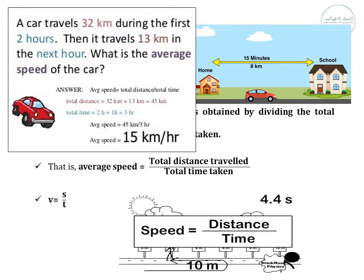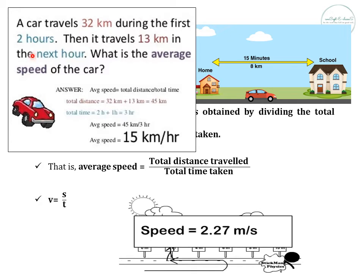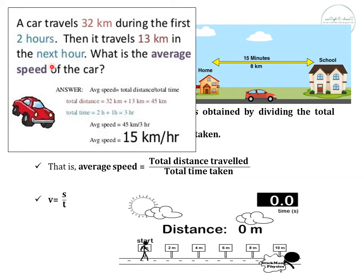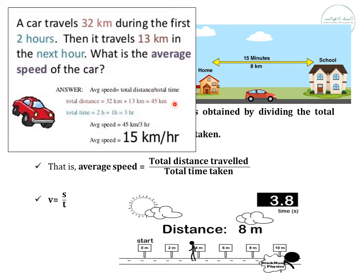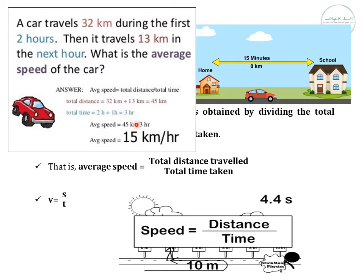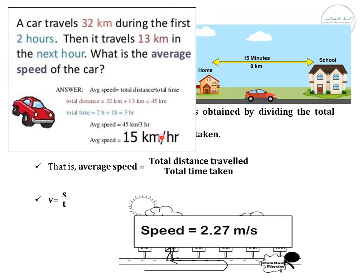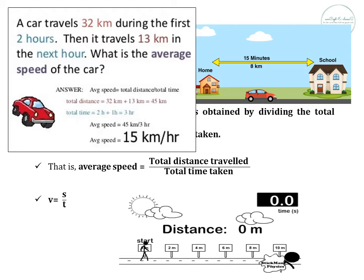Let us understand this by an example. A car travels 32 km during the first 2 hours, then it travels 13 km in the next hour. What is the average speed? Total distance = 32 + 13 = 45 km. Total time taken = 2 + 1 = 3 hours. So average speed = 45 ÷ 3 = 15 km per hour. We can also convert this into meter per second. This is how we calculate the average speed.